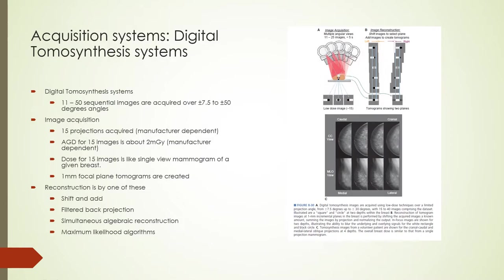Digital breast tomosynthesis is possible because of detectors based on TFT arrays, which allow acquisition and display of digital tomosynthesis images of the breast. The process involves acquiring several sequential images at different angles. Depending on the manufacturer, 15 projection images can be acquired, from which 1 mm focal plane tomograms are reconstructed. The dose for the tomosynthesis process is similar to that for a single-view mammogram. Tomograms are typically reconstructed by filtered back projection, though other methods are available.